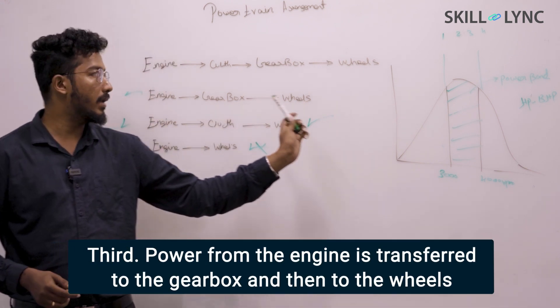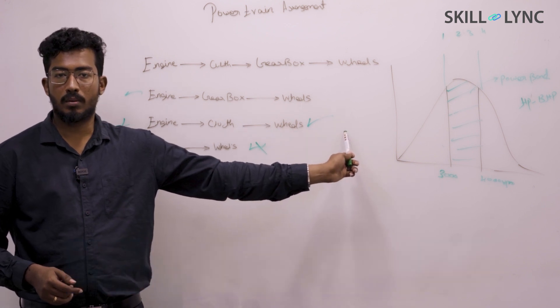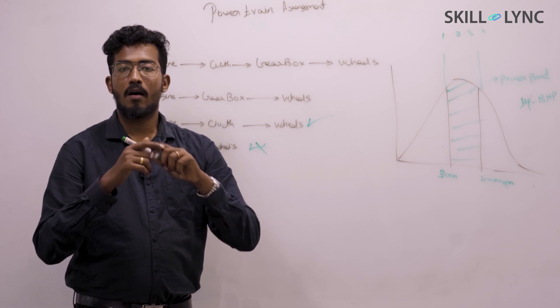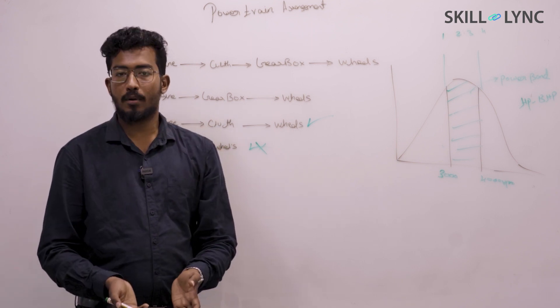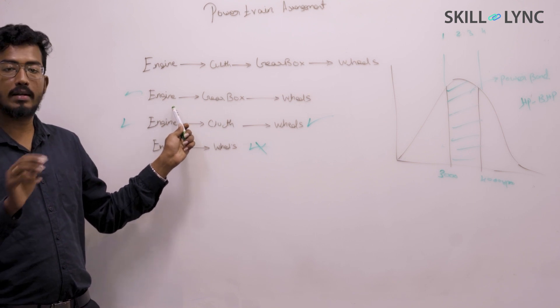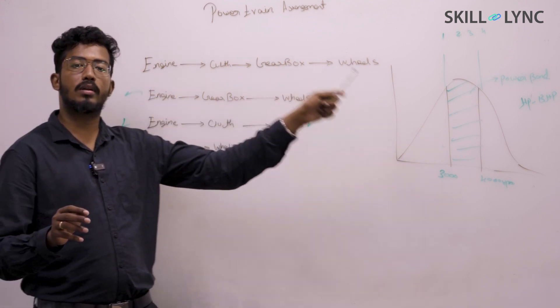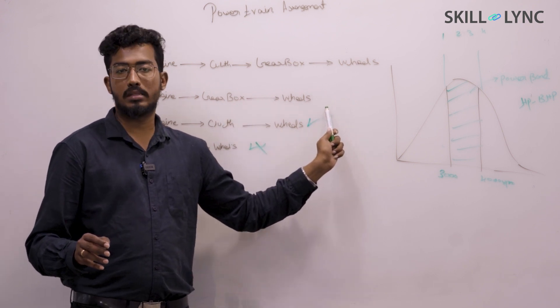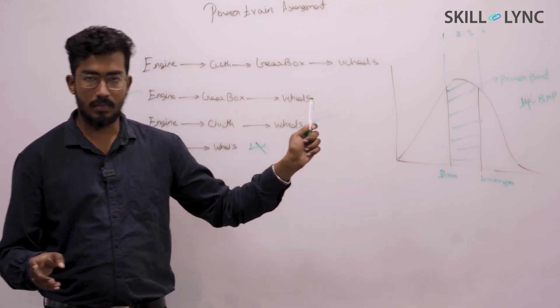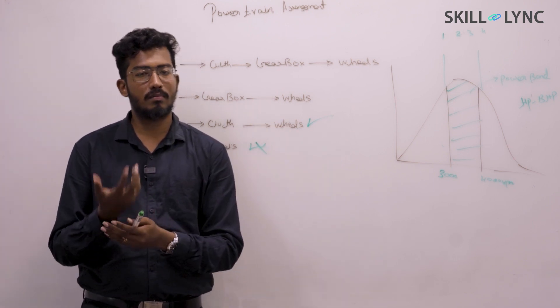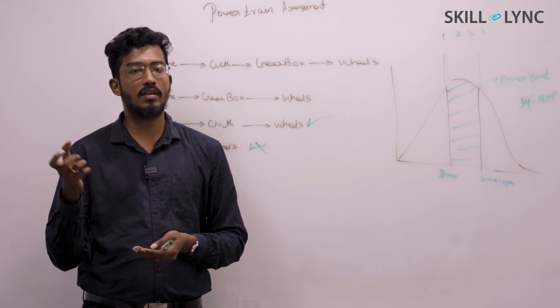Second, again think about it: this time we are eliminating clutch. Engine power is directly going to gearbox and then it's been connected to the wheels. Take a pause, think about it. Is it even possible to make a product with this design? You don't have a clutch now. Engine power is directly given to gearbox and followed by that it's going to the wheels. Yes, it's possible. There's only one product in this category which most of you might have not heard about. That's TVS Jive.